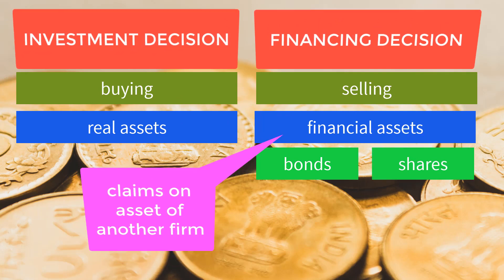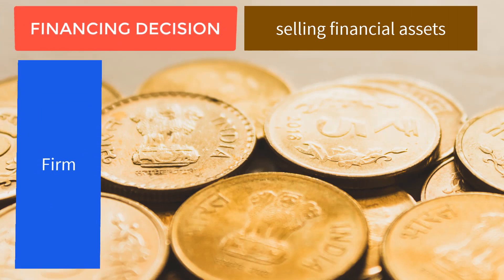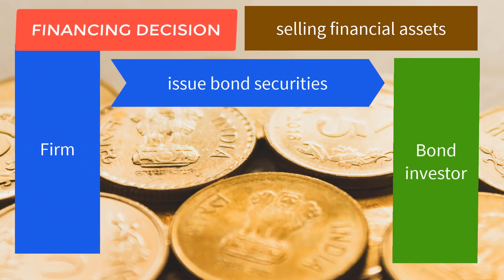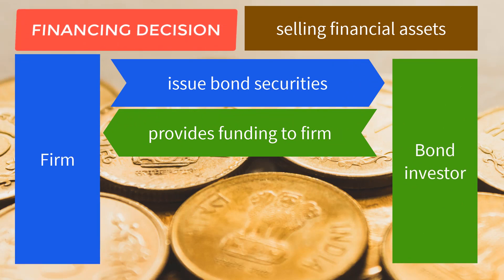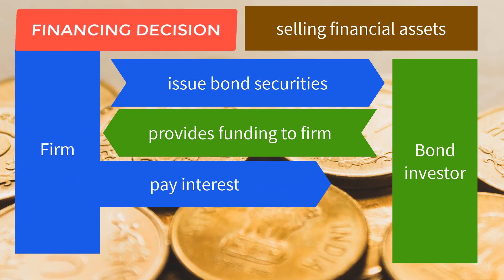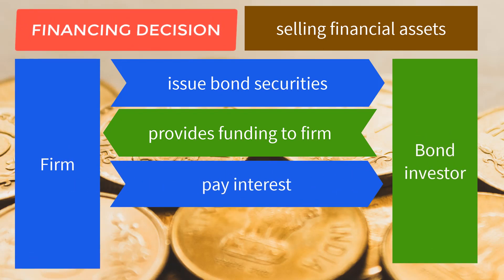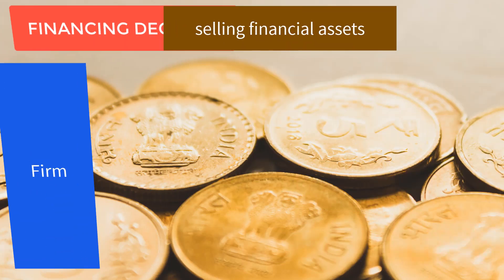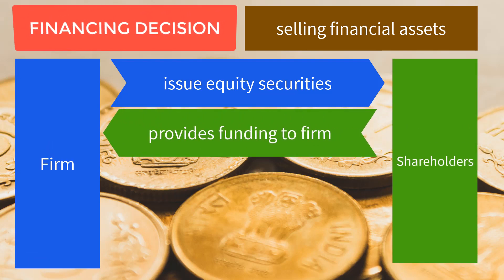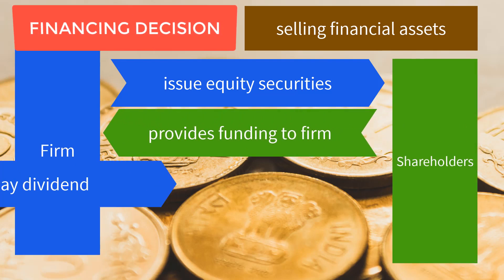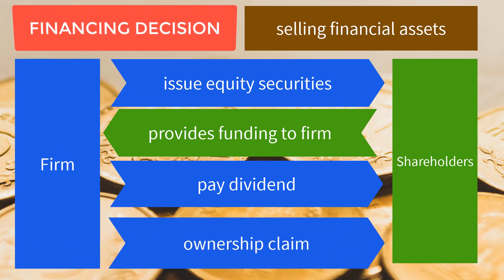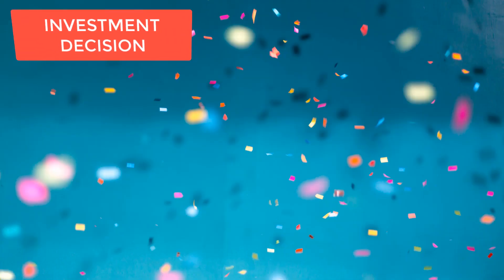Financial assets are claims on assets of another firm. When the firm issues bond securities, the bond investor provides money to the firm. The bond investor has a claim on income or cash generated by real assets, and will receive interest and principal amount at maturity. When the firm issues equity securities, the equity investor or shareholders provides money to the firm. Shareholders will receive dividends but will not receive principal amount; however, they have an ownership claim of the firm.